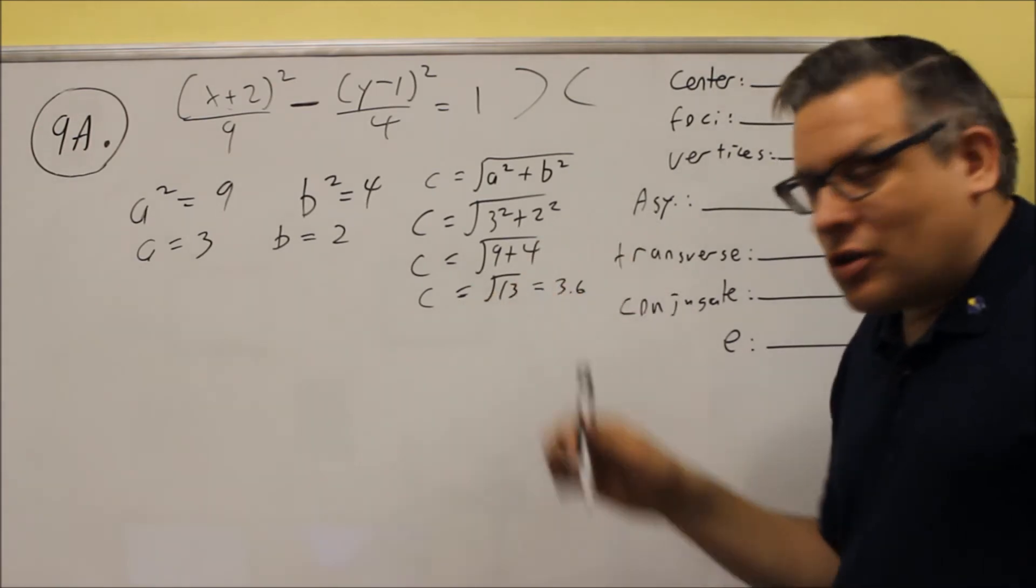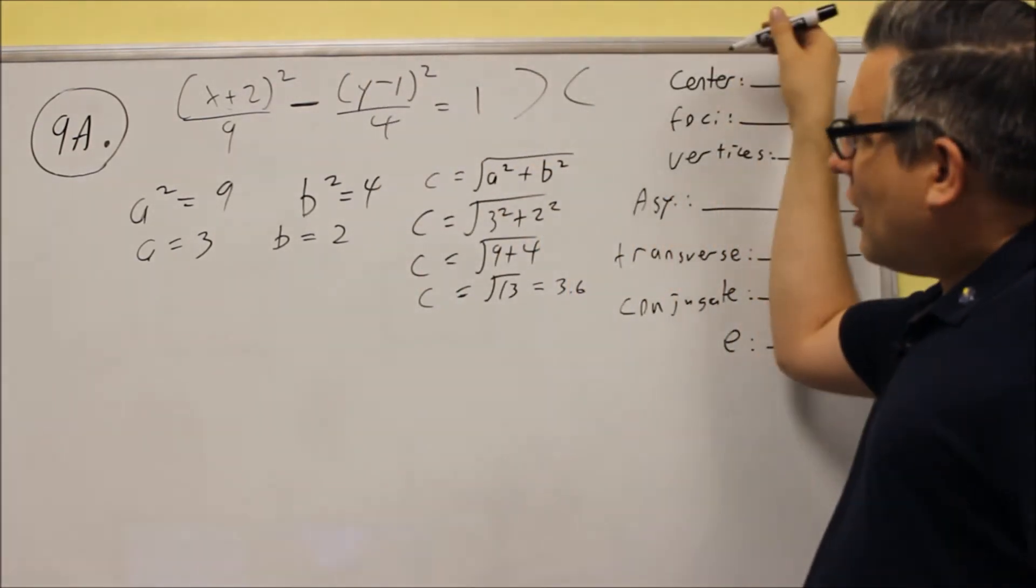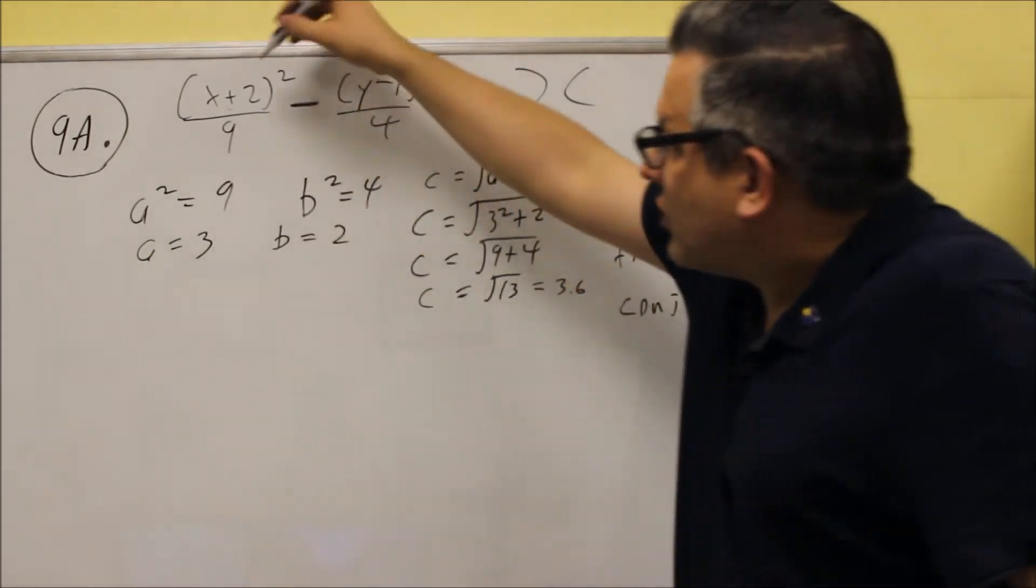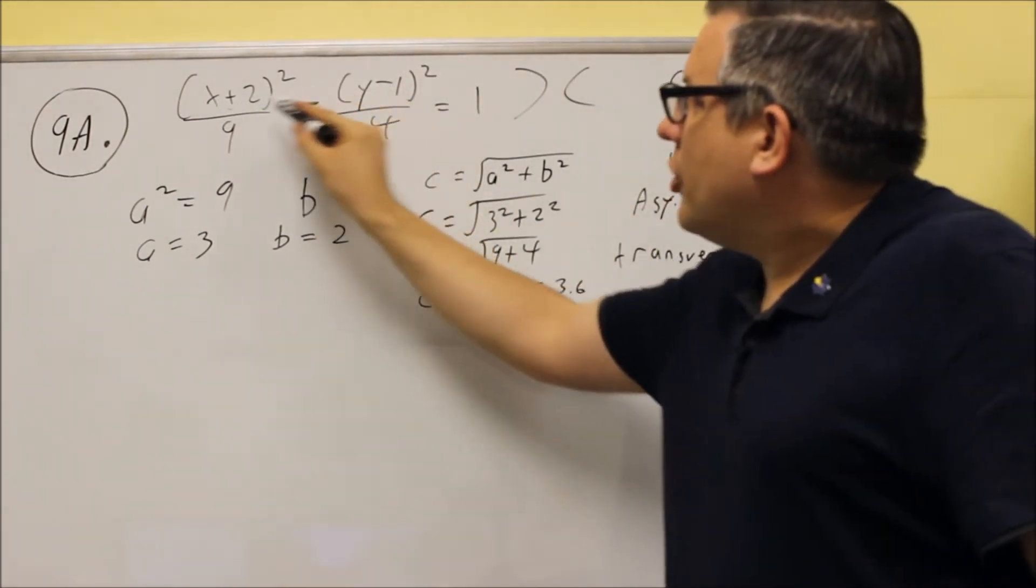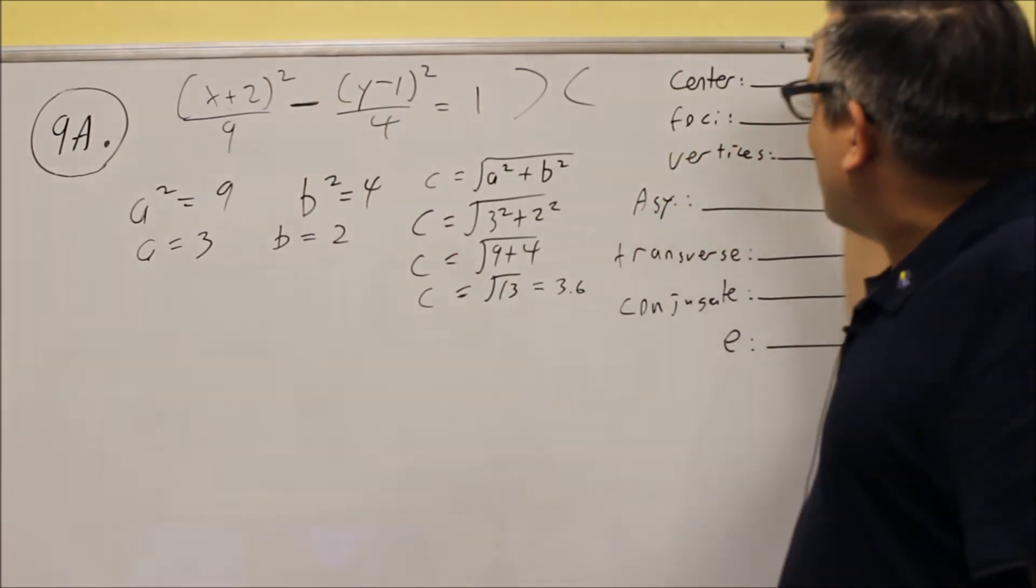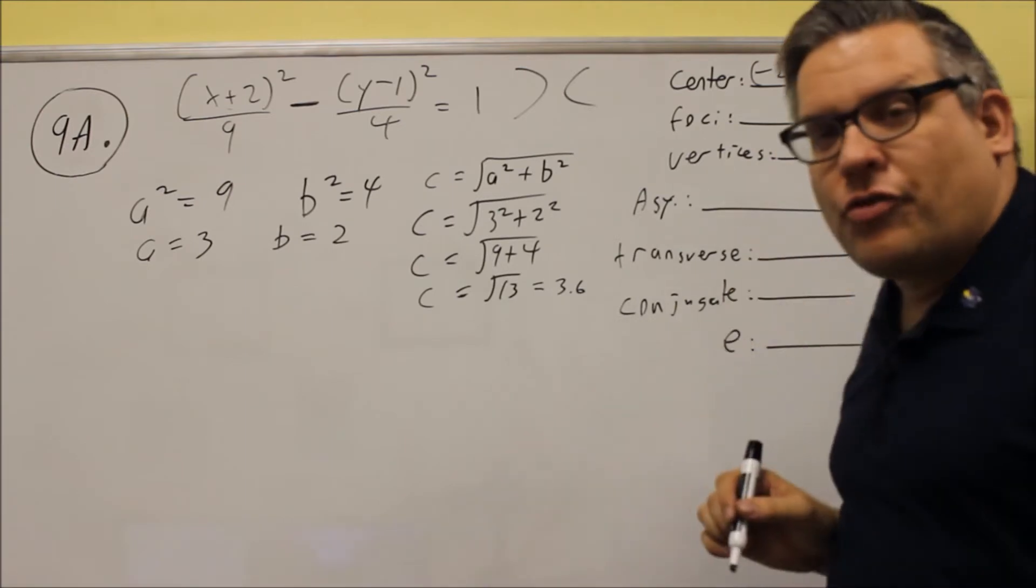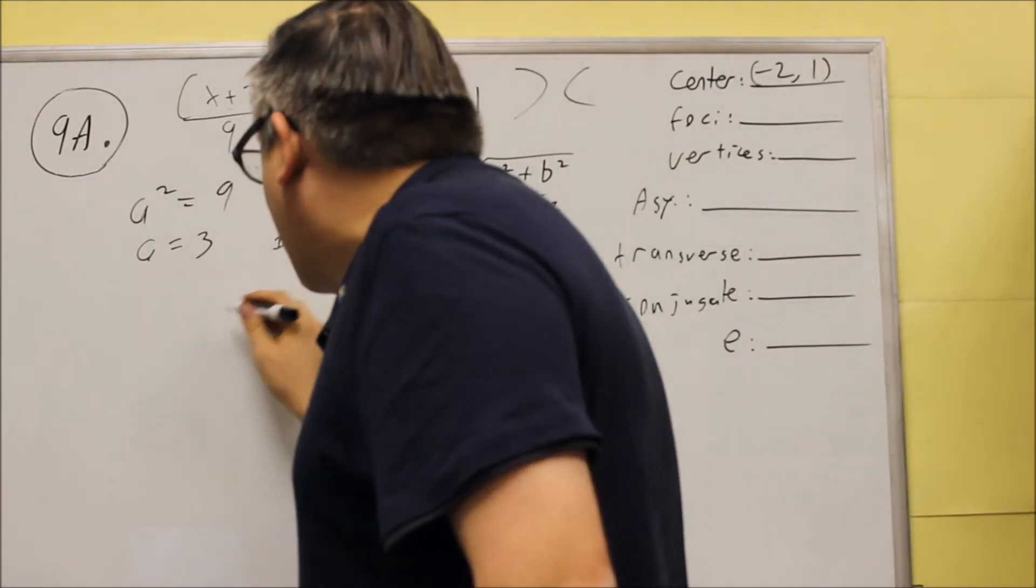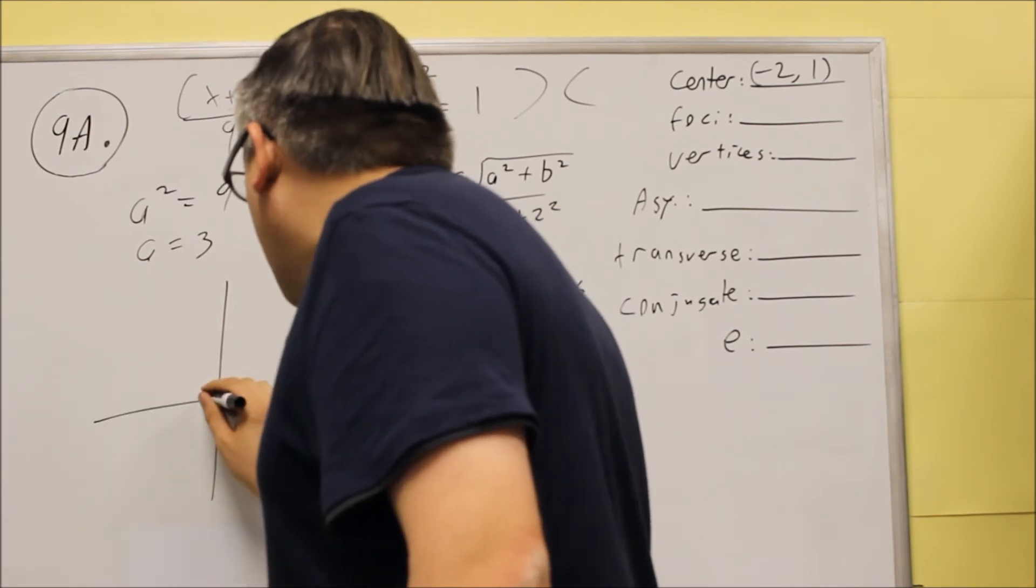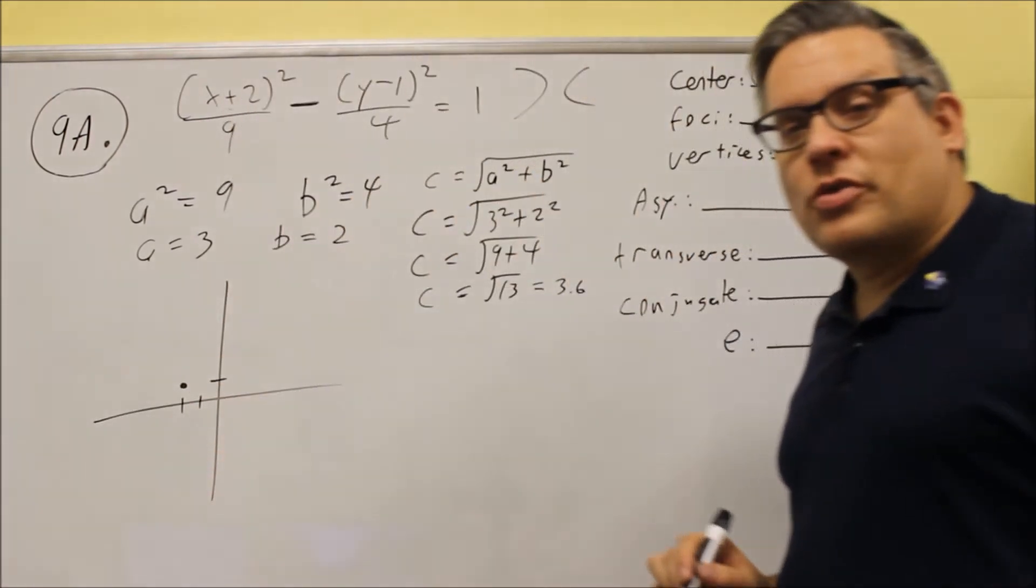So now we have a, b, and c. We're ready to graph it. First thing we want to always do is find the center. So before we graph, let's find the center. Remember, it's always opposite sign of what you see inside here. It's going to be negative 2 and positive 1. Negative 2 and positive 1. So we want to plot that. Negative 2, positive 1. It's going to be right there. So that's what we start with.